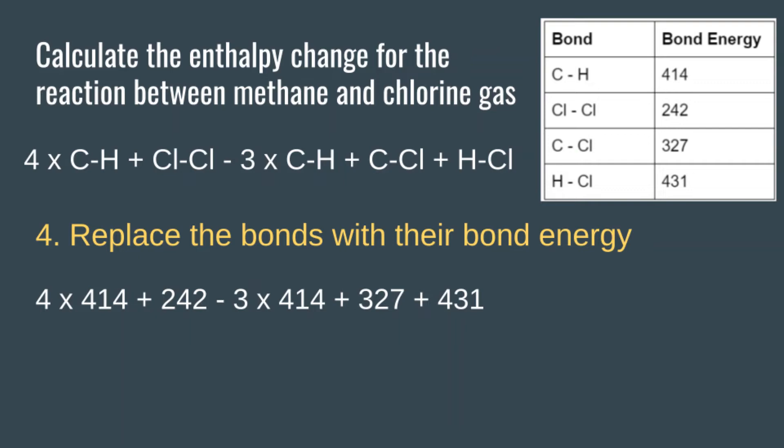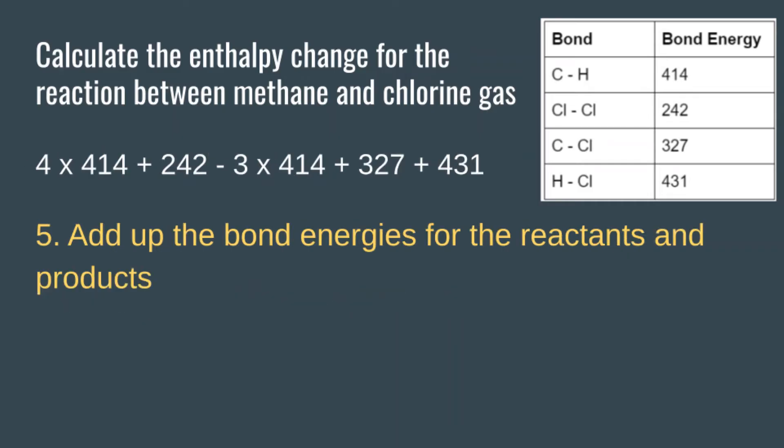So we have 4 × 414 + 242 minus the bond energies of the products. That's 3 × 414 for the C-H bond, plus the 1 C-Cl bond so plus 327, and the 1 H-Cl bond so plus 431.